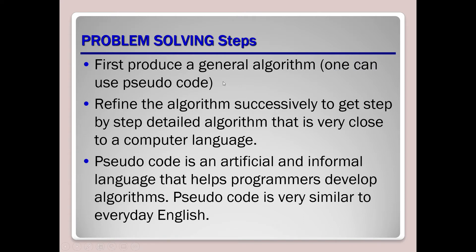Pseudocode is actually a very general form of algorithm. If you want a generic solution for a programming problem, you use pseudocode. Pseudocode is an artificial and informal language that helps programmers develop algorithms. It is very similar to everyday English — you break the problem into simple steps using English-like statements. Algorithms are also simple, but they more often use variables and reserved words of the target programming language.